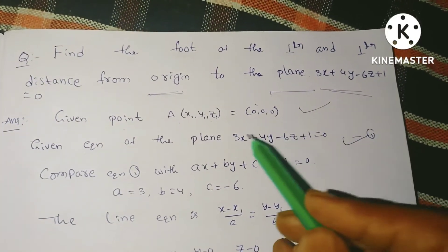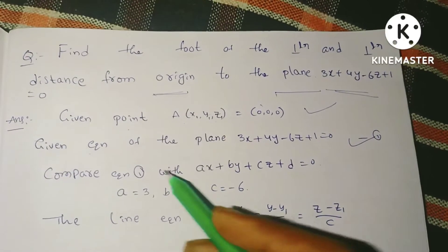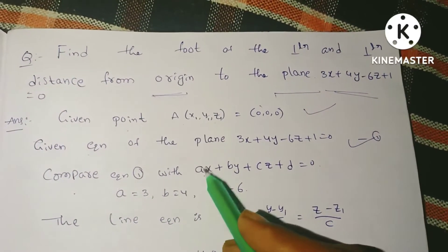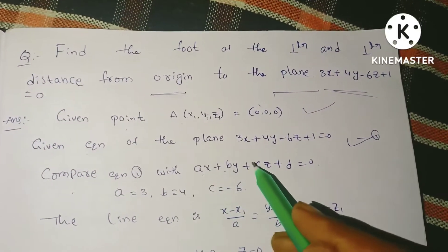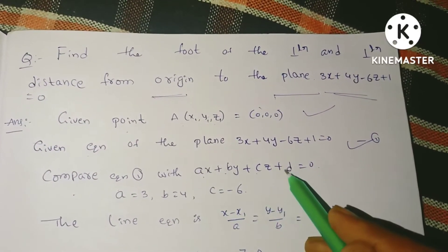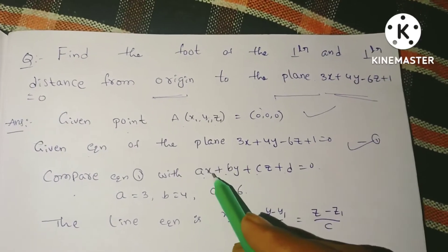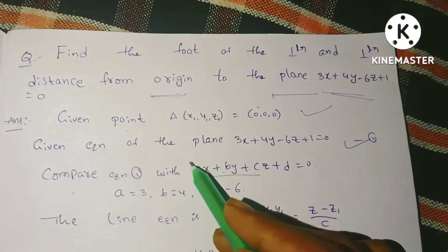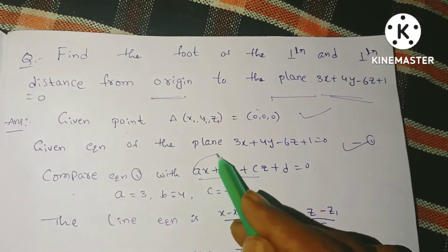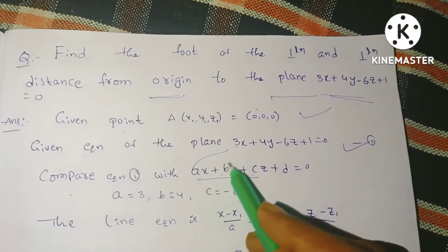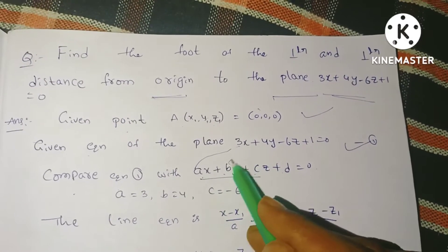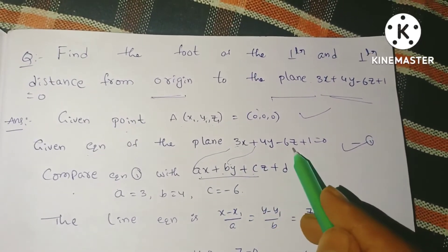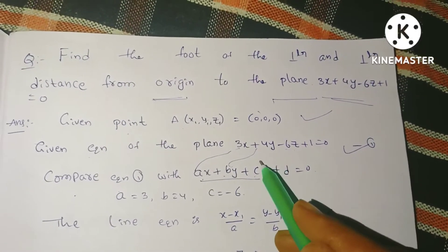Comparing the plane equation with the standard form AX + BY + CZ + D = 0, we identify: A is the coefficient of X, so A = 3; B is the coefficient of Y, so B = 4; and C is the coefficient of Z, so C = -6.